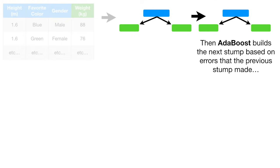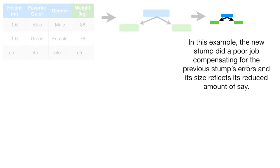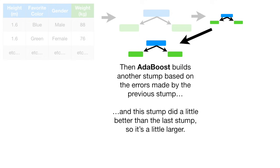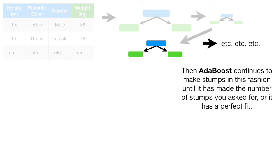Then Adaboost builds the next stump based on errors that the previous stump made. In this example, the new stump did a poor job compensating for the previous stump's errors, and its size reflects its reduced amount of say. Then Adaboost builds another stump based on the errors made by the previous stump, and this stump did a little better than the last stump, so it's a little larger. Then Adaboost continues to make stumps in this fashion until it has made the number of stumps you asked for, or it has a perfect fit.